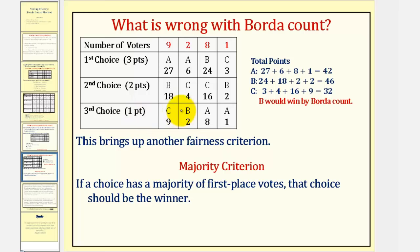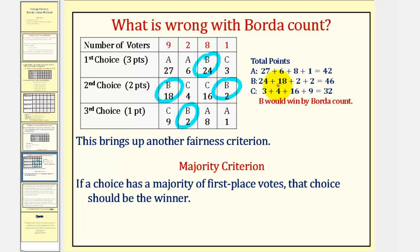So now let's find the total number of points for each candidate. A receives twenty-seven plus six plus eight plus one, or forty-two points. A was the majority winner. But if we look at candidate B, B receives twenty-four plus eighteen plus two plus two points, which comes to forty-six points. Notice how candidate B has more points than A, even though A is the majority winner. And finally, candidate C receives three plus four plus sixteen plus nine, or thirty-two points. So notice how B would win using Borda Count.